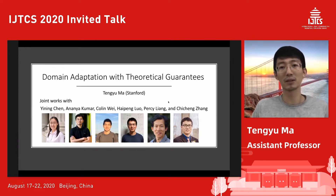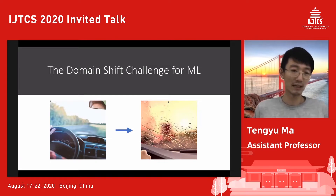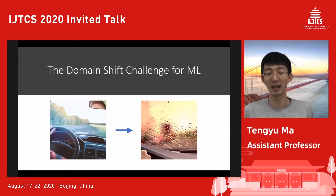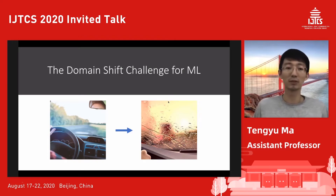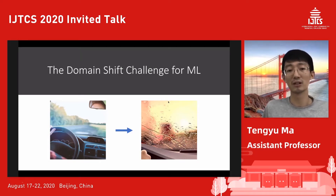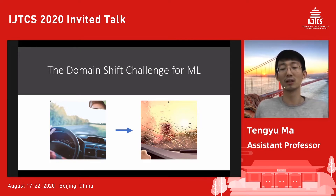I'm going to talk about domain adaptation with tight guarantees. These are two works on domain adaptation with some theory about it. One of the major challenges for applying machine learning systems to broader applications is domain shift. When there is a domain shift, the accuracy drops significantly. For example, if you train your self-driving car with data from sunny good weather, and then test on the road in different conditions, the distribution of the testing environment is very different, and the accuracy of the machine learning models can drop significantly, posing safety risks.